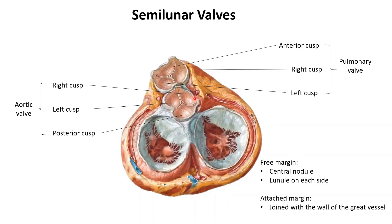The attached margin does not attach to a fibrous ring — instead the attached margin attaches to the great vessel wall itself. For the aortic valve, the attached margin of each cusp attaches to the wall of the aorta; for the pulmonary valve, the attached margins attach to the wall of the pulmonary trunk.